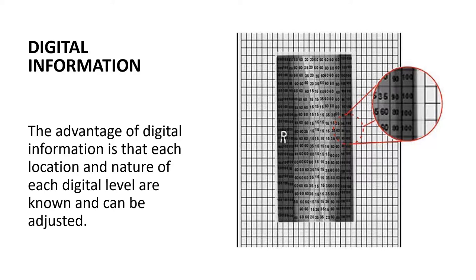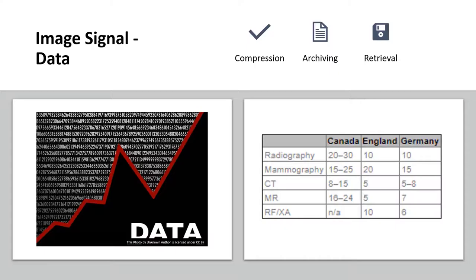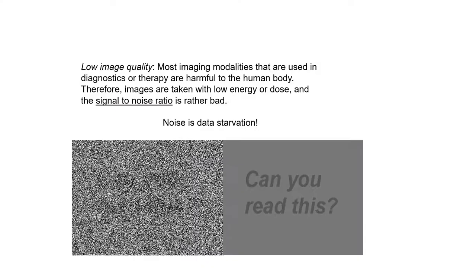This allows for many different combinations of the data to be viewed without having to take more images. The data from the signals are often compressed for storage. When we retrieve the data we have to utilize a standard to decide what would make the data comparable to the original. So we have different levels of compression allowable for different countries.